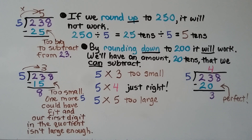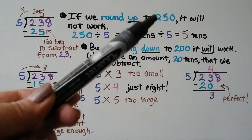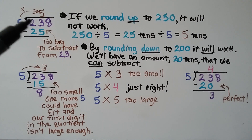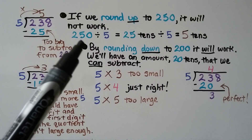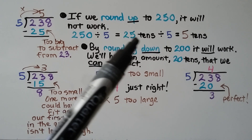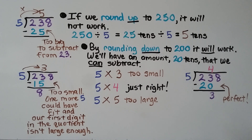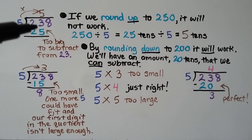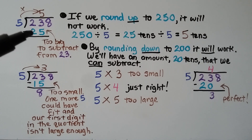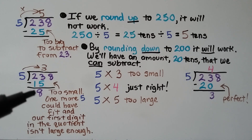If we rounded 238 up to 250, it will not work. If we thought 5 can fit into 250 how many times — 250 divided by 5 would be 25 tens divided by 5, which is 5 tens — we would put a 5 up here. But then 5 times 5 is 25, and this 25 is too big to subtract from the 23 tens. By rounding down to 200, it will work. So 5 times 5 would be too large because we can't subtract the 25. And 5 times 3 would be too small — if we put a 3 here, 5 times 3 is 15, and when we subtract we get an 8. This 15 is too small because one more 5 could have fit into this 8.